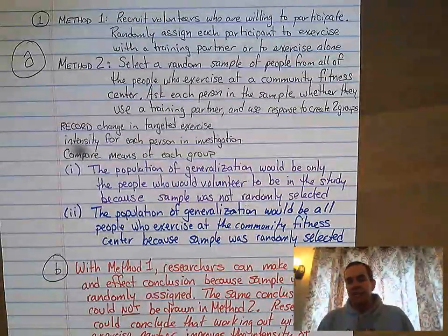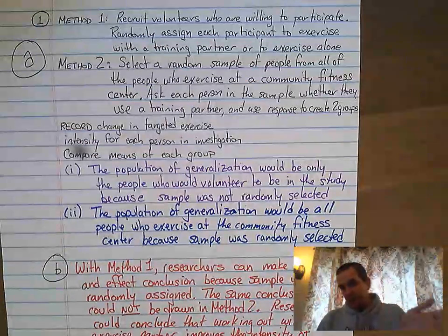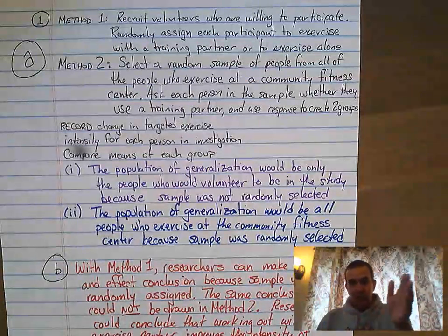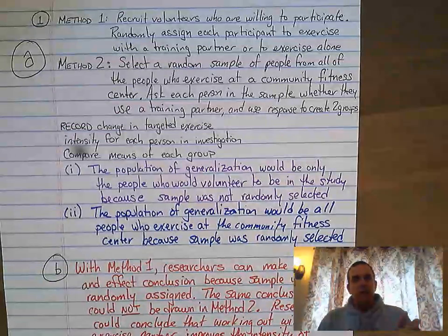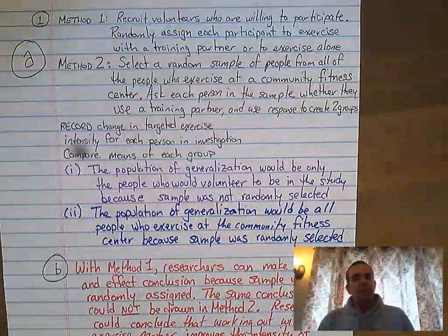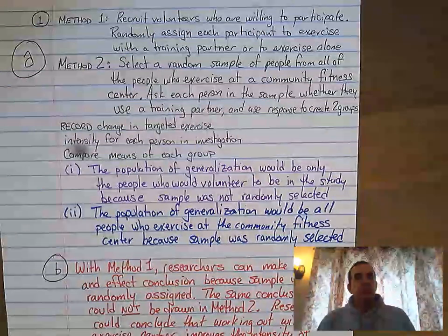She did not randomly select them. Just because we randomly assign them — that's an experiment, that's further down the road. This is just about how we're gathering the groups. With the second method, we actually randomly selected people from a population, so we could make a generalization about all the people at this community fitness center because the population was randomly selected.